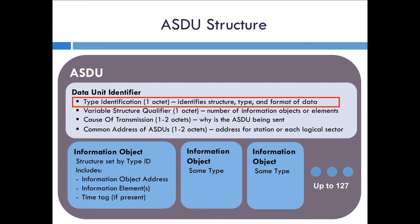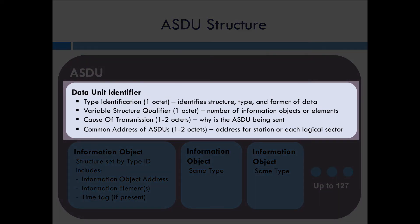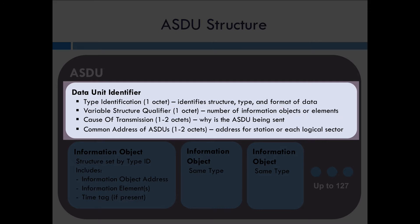If you look at how the ASDU is put together, there's always a data unit identifier. This identifies what type the ASDU is — basically it describes the format of the data, what's included, and the basic types of data included in the message. It also has the VSQ, or variable structure qualifier, which identifies how many objects are in the ASDU. You can also have the cause of transmission, which is why the ASDU is being sent.